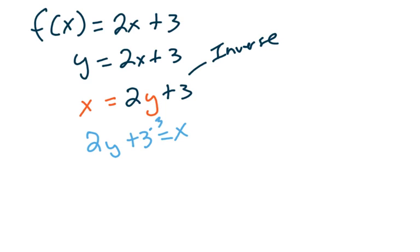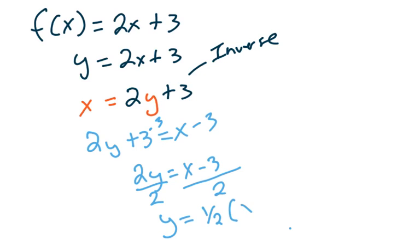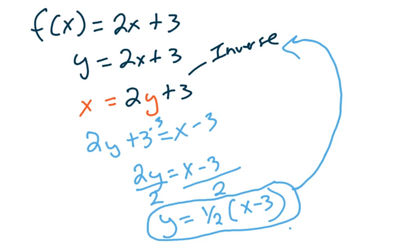So I'm going to subtract 3 from both sides. That leaves me 2y equal to x minus 3. Now I want to solve for y. So then I divide this by 2. Divide this whole side by 2. So now I'm left with y is equal to 1 half x minus 3. So now we have the explicit form inverse of this. So the inverse of that is this.